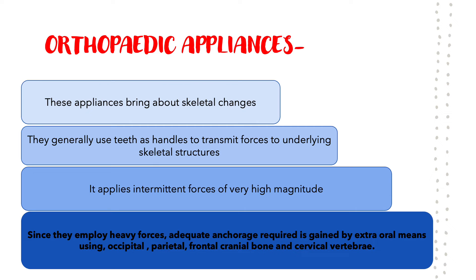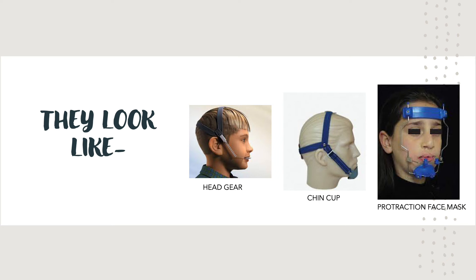That means for some time it will apply force and for the rest of the time it is not applying force, but that intermittent force is of very high magnitude — almost 300 to 500 grams per side. Because such heavy forces are applied, the anchorage — the unit against which that large force is applied — has to be sufficient, and teeth alone cannot provide it. So we derive anchorage from other skeletal structures: the occipital bone at the back of the head, the vertebra, the parietal bones on the sides, and the frontal bone at the forehead all serve as anchorage and supporting units.